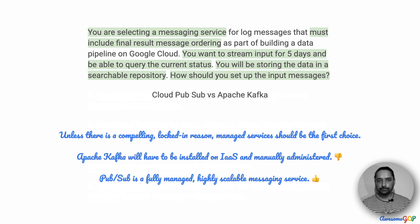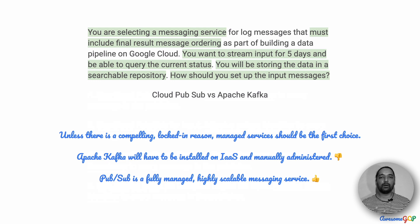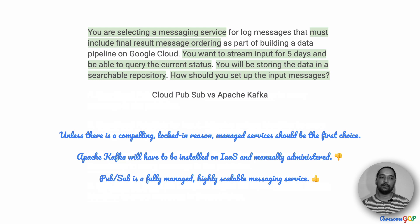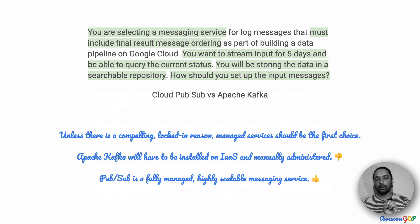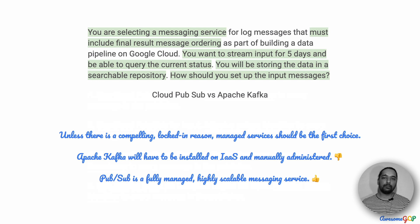The general recommendation is that when you are moving to one of the public clouds, unless there is a compelling lockdown reason, your first choice of technology should be one of the managed services. It reduces the amount of administrative overload and will also give you, if managed well, the latest technology and take care of things like security, IAM, storage, and all of that. Apache Kafka is an open source solution that will have to be installed on some infrastructure service, so you will have to set up a Google Compute Engine instance and administer it manually. That usually should not be a first preference.